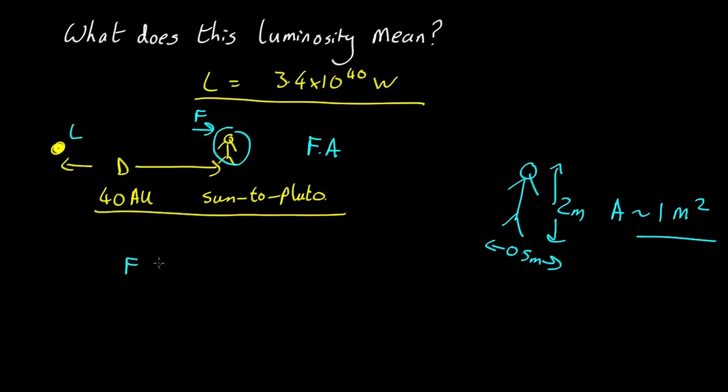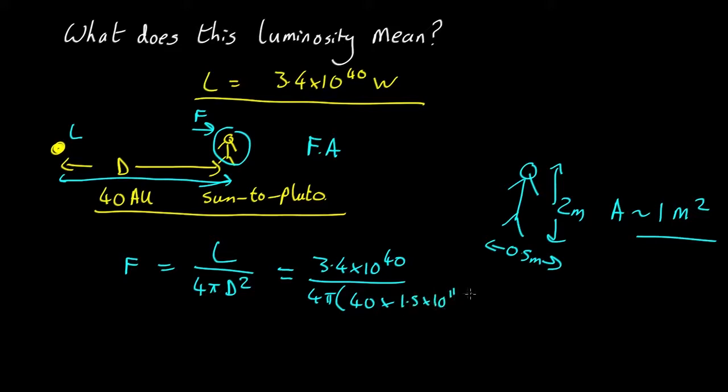We know that flux equals luminosity over 4 pi d squared. We don't need to worry about redshift 1 plus redshift here, because the universe isn't expanding appreciably over this short distance. Which comes out as 3.4 by 10 to the 40, over 4 pi, 40 astronomical units, 40 times 1 astronomical unit, which is 1.5 by 10 to the 11 metres squared. And that comes out at 7.5 by 10 to the 13 watts per metre squared.